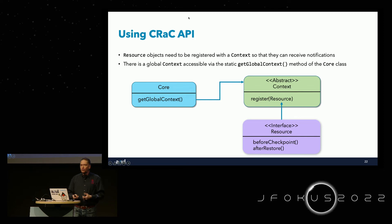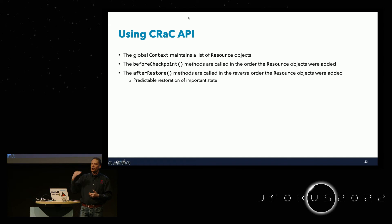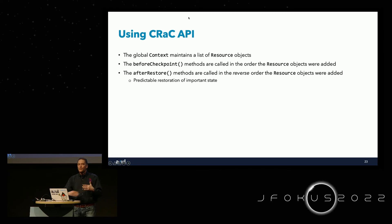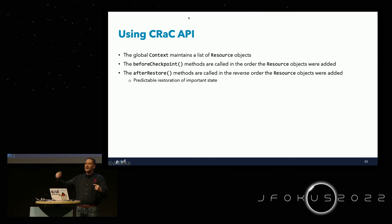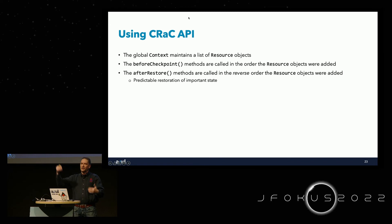In terms of usage, you call Core.getGlobalContext() to get a Context, then call the register() method with your resources to make them available. The context maintains a list of resource objects. If you have resources A, B, C, beforeCheckpoint() is called on A, then B, then C. After restore, afterRestore() is called on C, then B, then A — the reverse order. This allows you to tidy things up in a particular sequence and reverse it on restoration, giving you a predictable order that's important if, for example, one file must be opened before another.